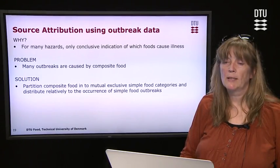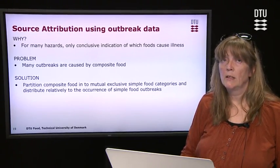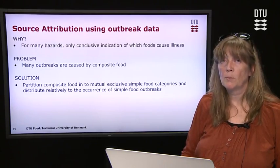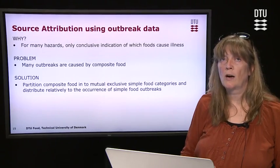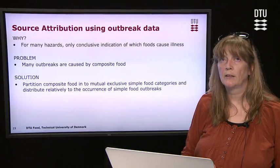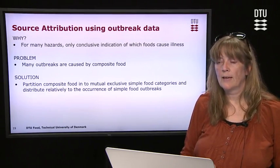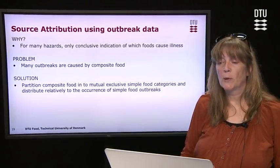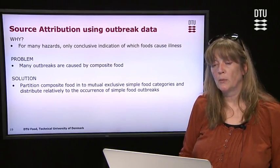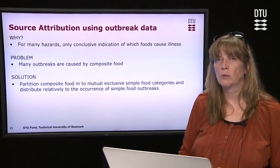The next method is source attribution using outbreak data. Why use outbreak data? For many hazards it is the only conclusive indication of which foods cause illness, and in many countries without good surveillance of animals and food, it might be the only approach available. Most countries have some kind of outbreak reporting. One problem is that many outbreaks are caused by composite foods consisting of many different ingredients. For example, a hamburger consists of a bun, beef burger, lettuce, and tomatoes — so which ingredient is the primary source? As a solution, you can partition composite food into mutually exclusive simple food categories and distribute relatively to the occurrence of simple-food outbreaks.